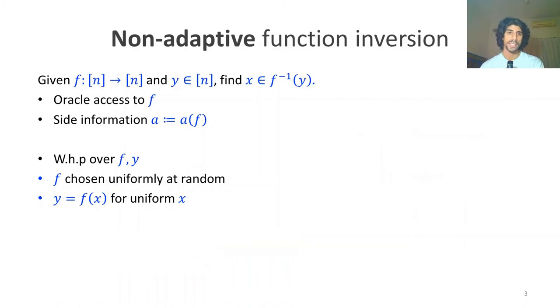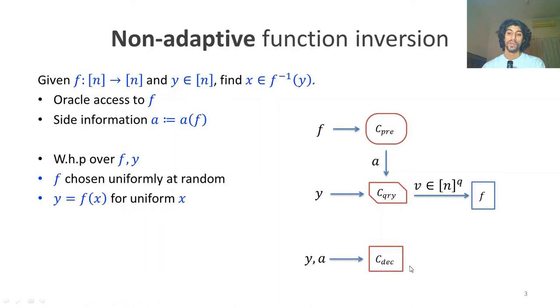Another variant exists: non-adaptive function inversion. The basic problem is the same, except now all queries must be performed in bulk at once. To do that, we introduce an intermediate phase, the query selection phase. The query selection algorithm has access to the side information and the value y which we wish to invert, then outputs a series of indices which are the queries for f. In the online phase, the decoder knows y, the advice string a, and is given the responses from f, and outputs a value hopefully in the pre-image of y.